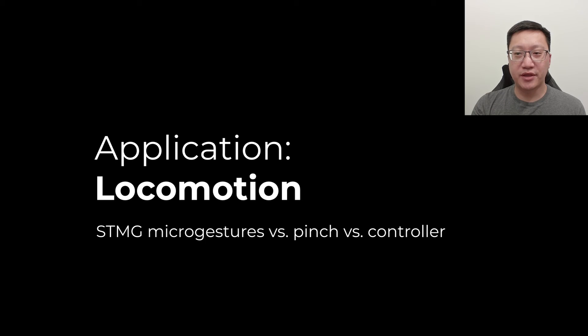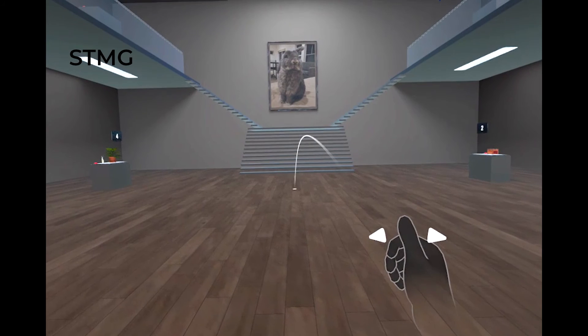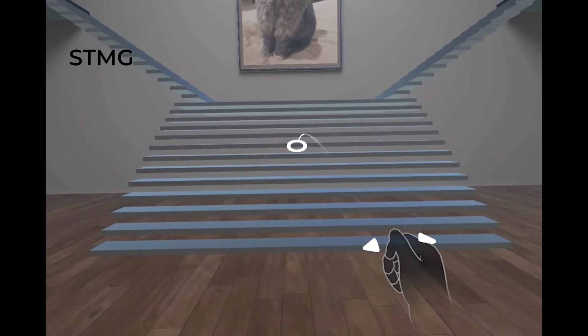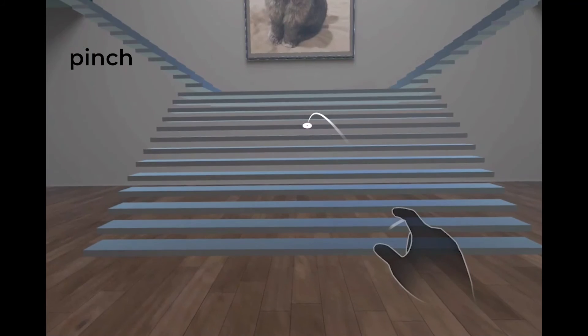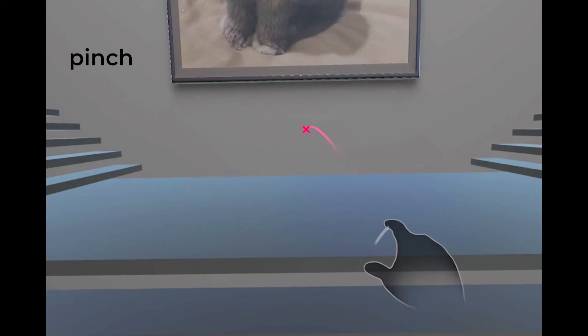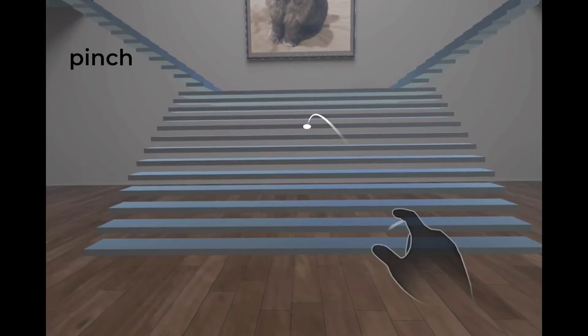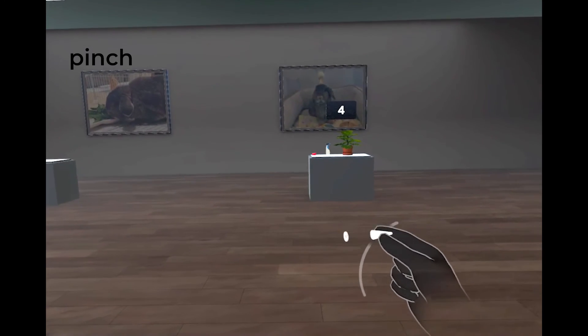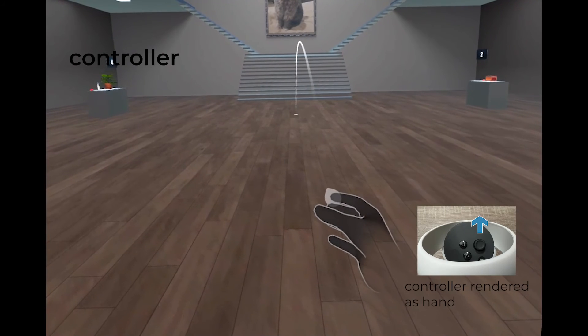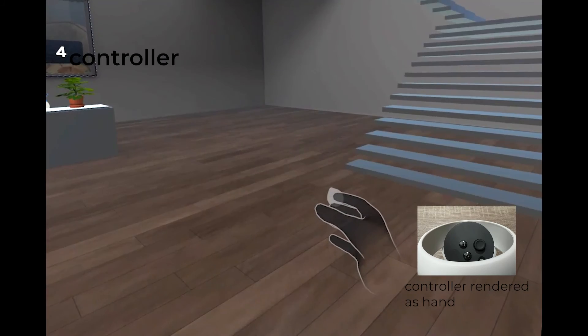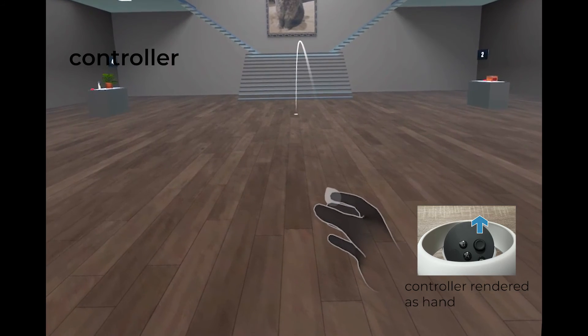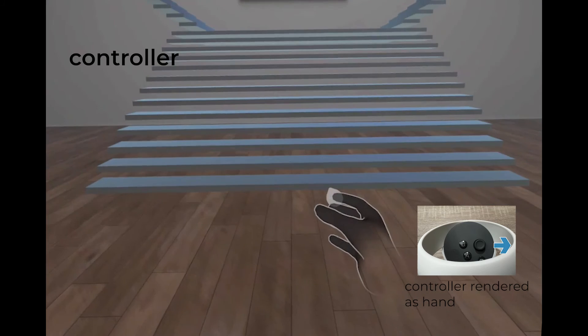We compared STMG to a pinch-based method and a controller-based method. The pinch-based method starts from the hand in an L-shaped pose. While the palm is facing up or down, pinch will teleport. Orienting the palm to face to the side, then pinching to the left or right of the reference point will snap turn left or right. With the controller, pushing the joystick forward will aim the teleportation arc and releasing the joystick will teleport to the end of the arc. Pushing the joystick left or right will snap turn left or right.